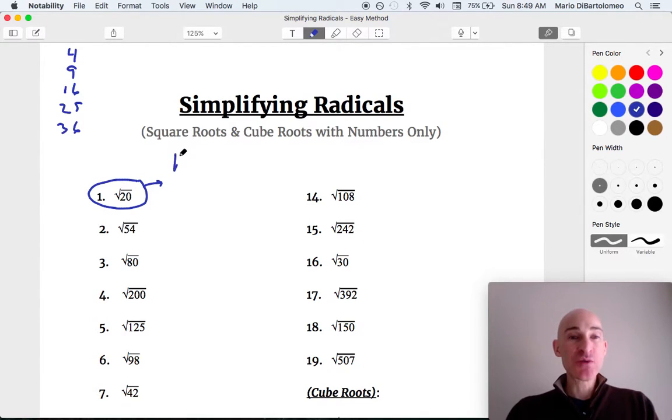In this case, you can see the square root of 20 is actually like 4 times 5. What's the square root of 4? It's just 2, right? And so we're left with 2 square root of 5.